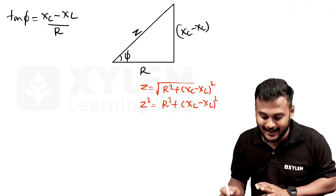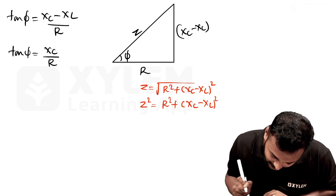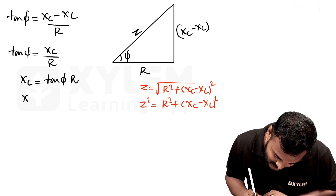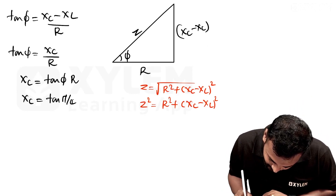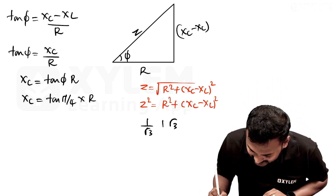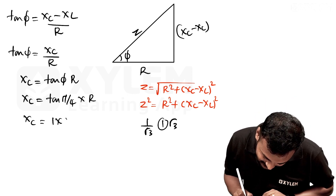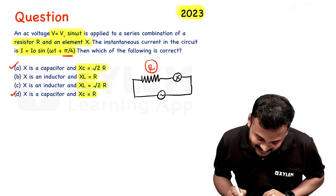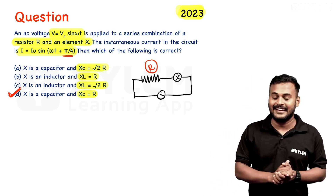Since there is no inductor, it is only a capacitor-resistor circuit. So inductive reactance XL is zero. Therefore tan φ equals XC divided by R, and XC equals tan φ into R. The phase difference φ is π/4, which is 45 degrees, and tan 45° equals 1. So XC equals 1 into R equals R. Therefore the right answer is option D.